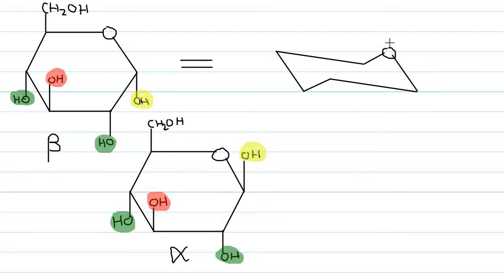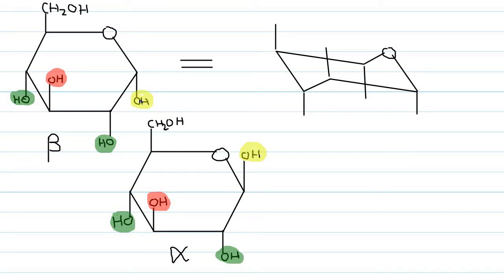First draw the axial bonds. At oxygen, there is no need for an axial bond. Starting from carbon one: down, up, up, up, down, up. At the oxygen position there is no need for an axial bond. So these are the axial bonds.